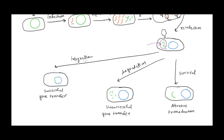There can be three outcomes from this situation. The first outcome: just as in transformation, this piece of DNA can get integrated into the host chromosome, becoming part of the bacterial chromosome. This results in successful gene transfer — the bacteria now has a recombinant chromosome containing part of another bacterium's genome.